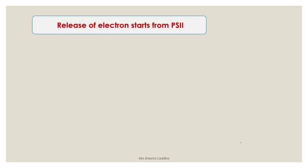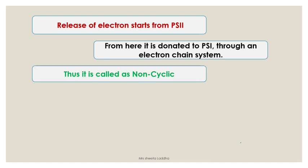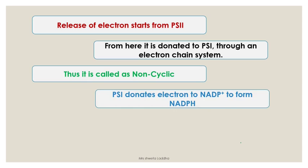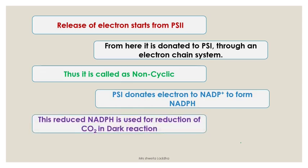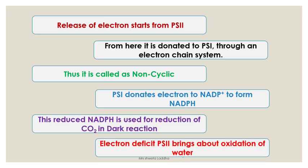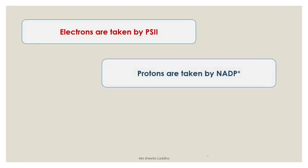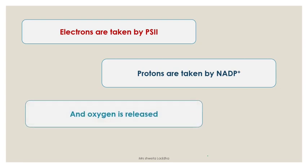Let us revise. Electron release starts from photosystem 2. Plastocyanin is the last acceptor in the chain from PS2, and it donates the electron to PS1 — making it non-cyclic, because the electron does not return to PS2. PS1 donates its electron via ferredoxin reducing substance and ferredoxin to NADP, forming NADPH. The reduced NADPH is then used for reduction of CO2 in the dark reaction. The electron deficit in PS2 is fulfilled by oxidation of water: water splits, returning electrons to PS2, protons go to NADP to form NADPH2, and oxygen is released due to photolysis of water.